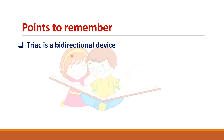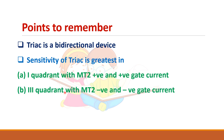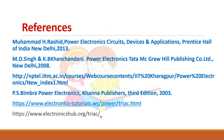Points to remember: TRIAC is a bi-directional device. The sensitivity of the TRIAC is greatest when MT2 is positive and gate is positive, and when MT2 is negative and gate is negative. TRIAC ratings are usually lower than the SCR and they are less reliable than SCR.